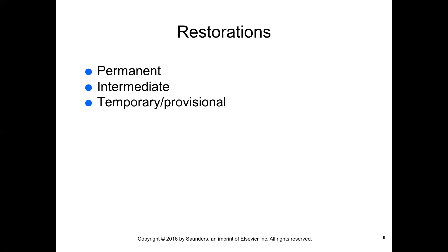By placing a sedative provisional restoration, the dentist has time to evaluate the response of the pulp before reappointing the patient for a permanent restoration. Essentially, placing a temporary or provisional restoration allows the tooth time to calm down — this is often done to avoid a root canal. If the temporary restoration does not relieve symptoms, the pulp may be exposed or the cavity so deep that any air or heat causes a flare-up. If the tooth does calm down, it will likely result in a large filling or a crown rather than a root canal.